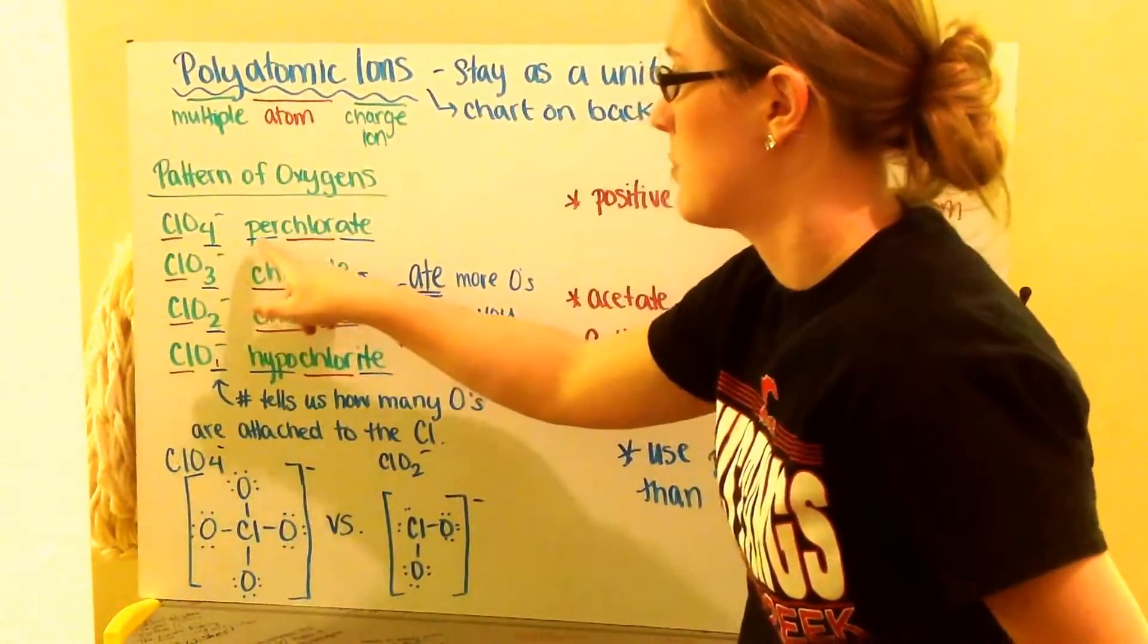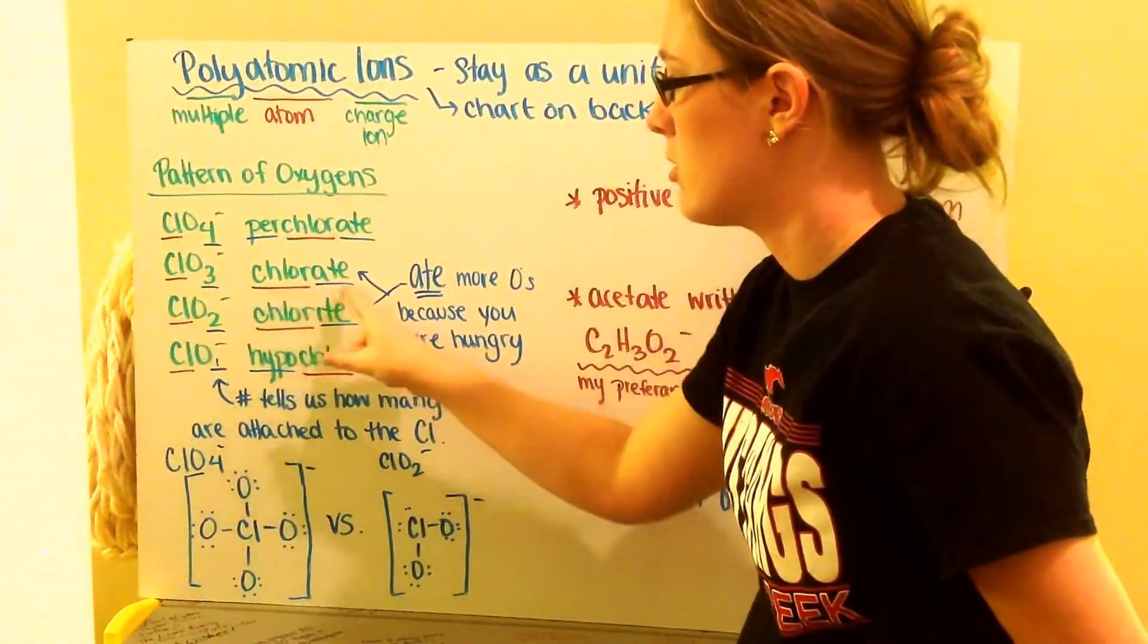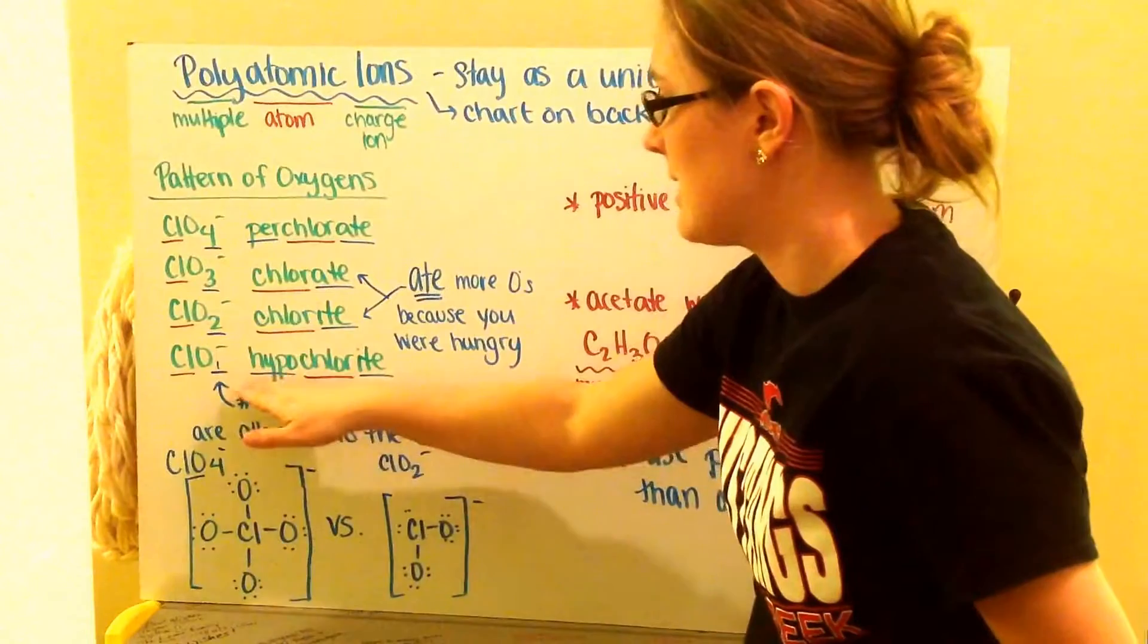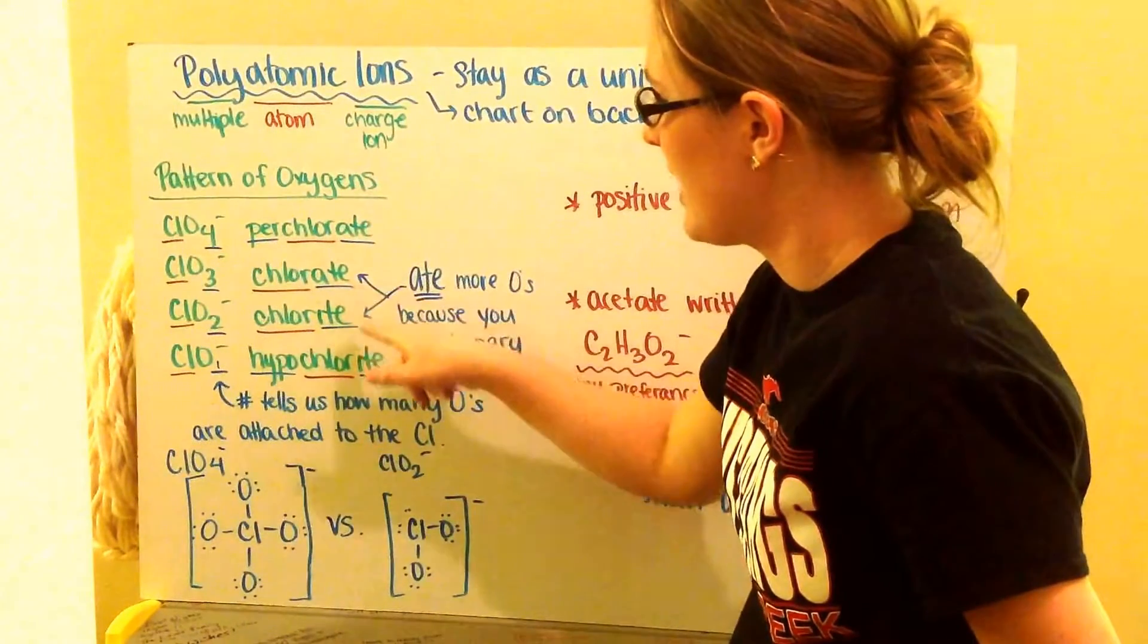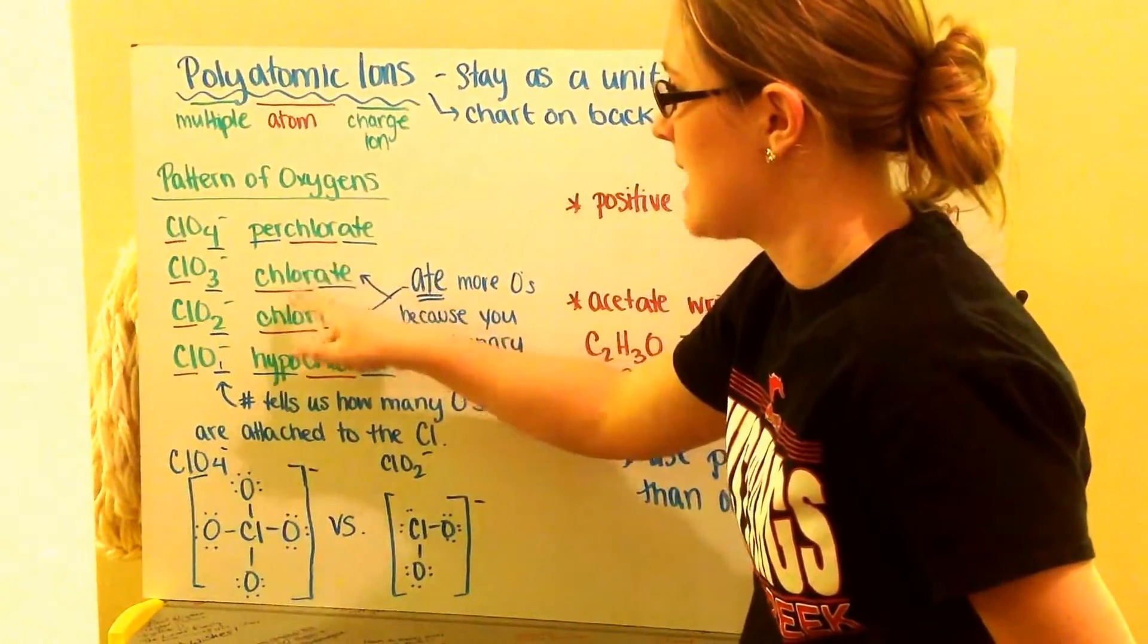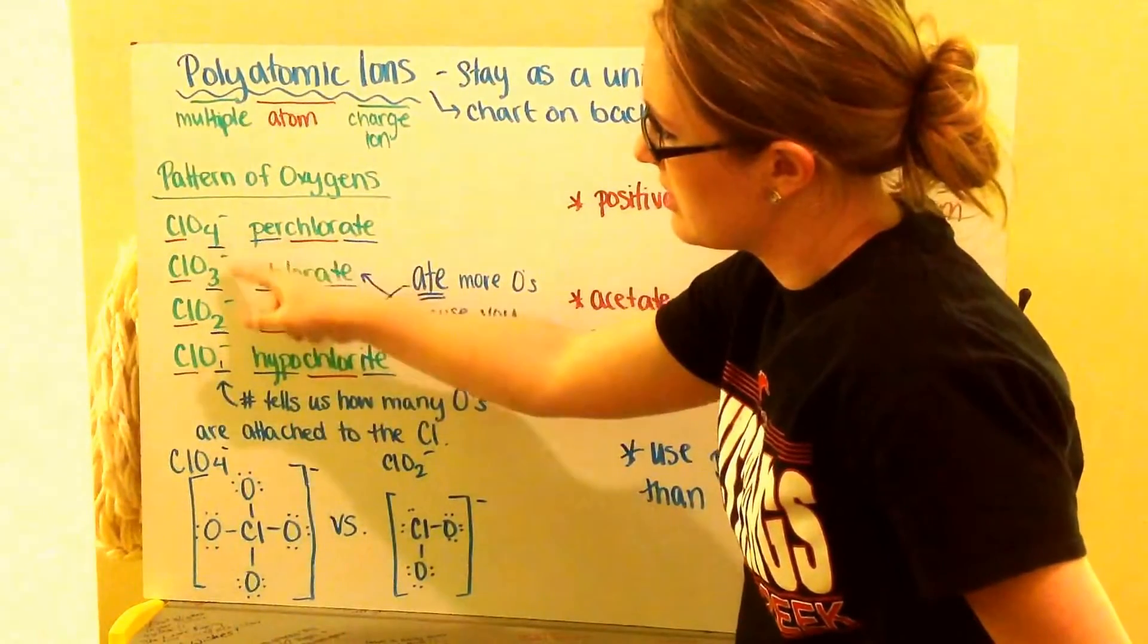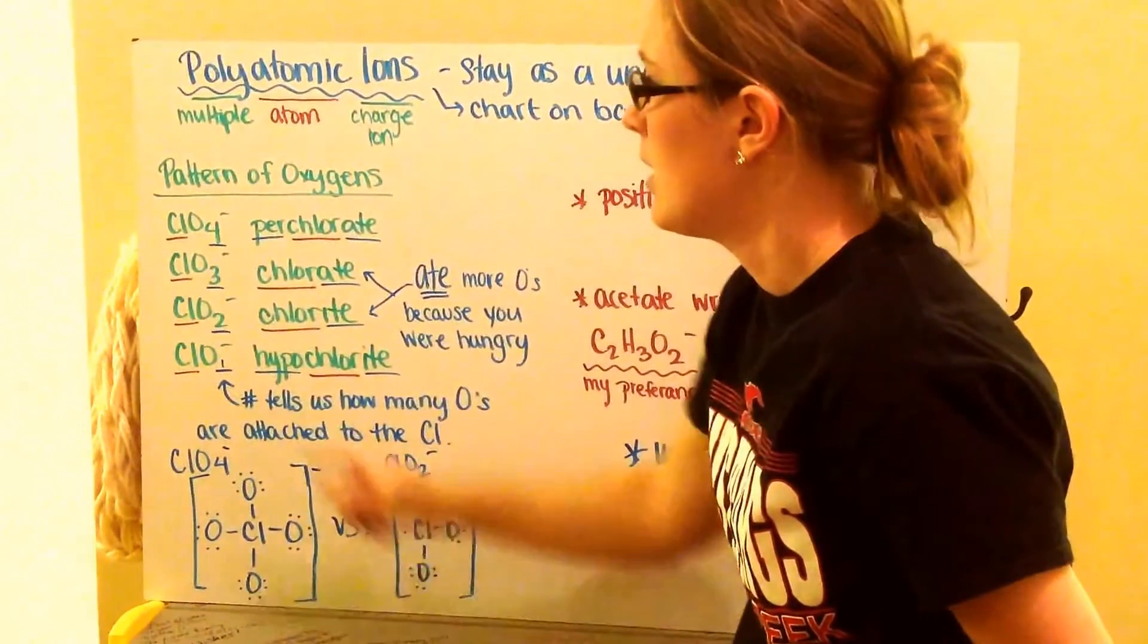I have ClO3 minus, ClO2 minus, and ClO1 minus. The Cl is my chlorine, O's are my oxygens. ClO4 is named perchlorate, ClO3 is chlorate, ClO2 minus is chlorite, and ClO minus is hypochlorite. Notice that I have different endings, some have different beginnings. They all have the same stem of chlor for my chlorines, which are all the same here. The only thing that changes is my number of oxygens. My charge also stays the same.